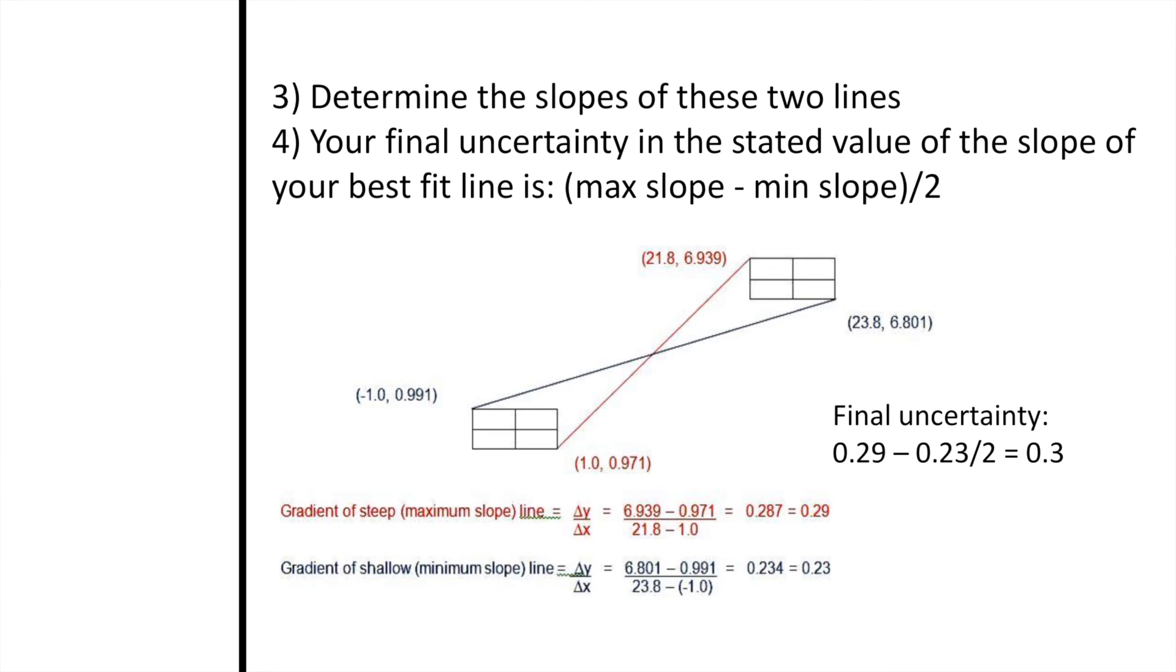Now that the maximum and minimum lines of best fit have been drawn, you can find the slopes mathematically. For each line, just take two coordinates that are along that line and find the slope. Remember that slope is the rise over run or the y-values divided by the x-values.